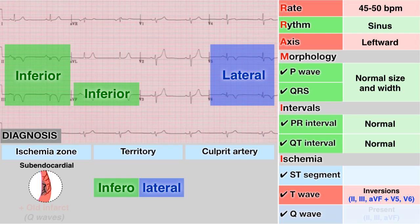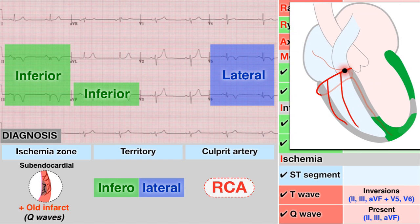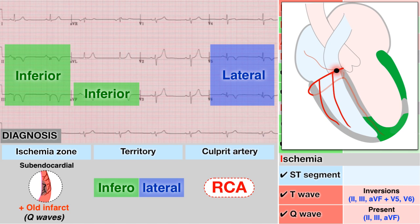Also note, the Q waves in the inferior leads represent an old infarct in that territory. The culprit here is likely the right coronary artery.